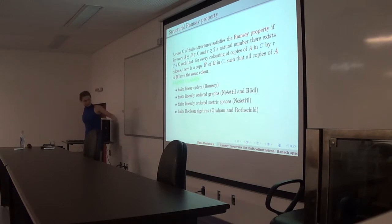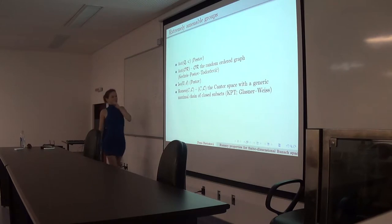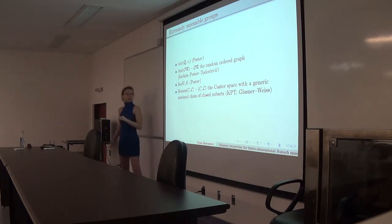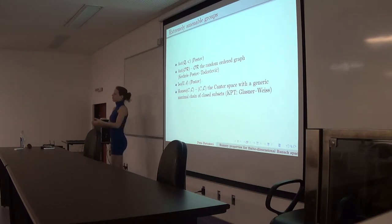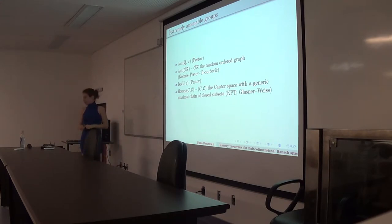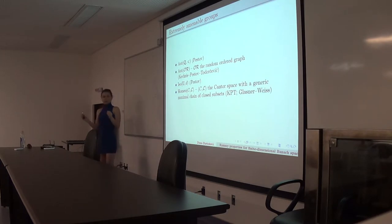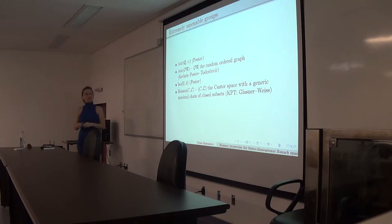As a result, here are Ramsey classes and their connecting automorphism groups. Since ℚ can be approximated by finite linear orders, the Ramsey property for finite linear orders gives us that the automorphism group of ℚ is extremely amenable. Similarly, if you take the countable random ordered graph — approximated by finite linearly ordered graphs — the automorphism group of the limit is extremely amenable. Nešetřil's result about finite linearly ordered metric spaces tells us that the isometry group of the Urysohn space is extremely amenable. And the Ramsey property for finite Boolean algebras gives information about the automorphism group of the countably atomless Boolean algebra, or the homeomorphism group of the Cantor space.